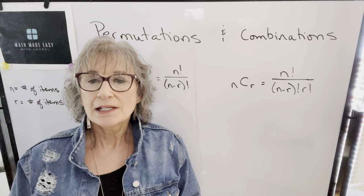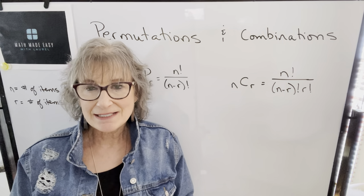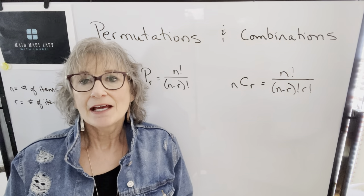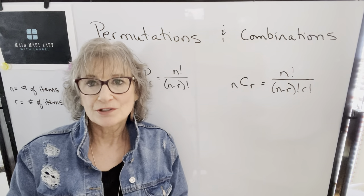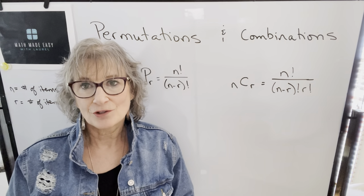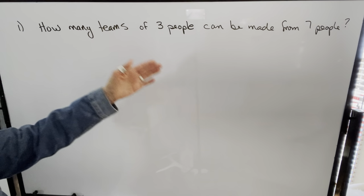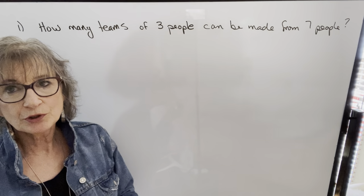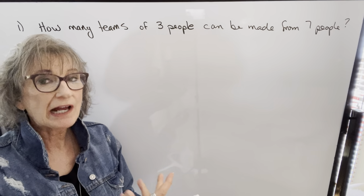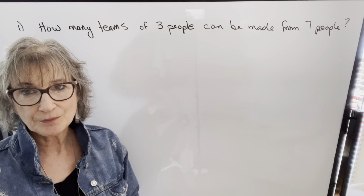Let's go through a wide variety of examples and I'll talk about how you know what formula to use to solve. Our first example says: how many teams of three people can be made from seven people? So you've got seven people and you want to choose a group of three from them.